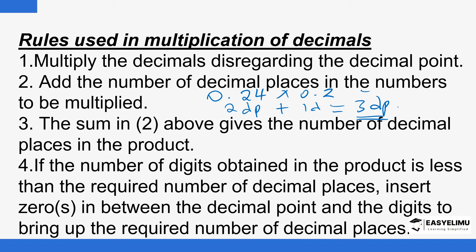The sum of the decimal places in the two numbers gives the number of decimal places in the product.